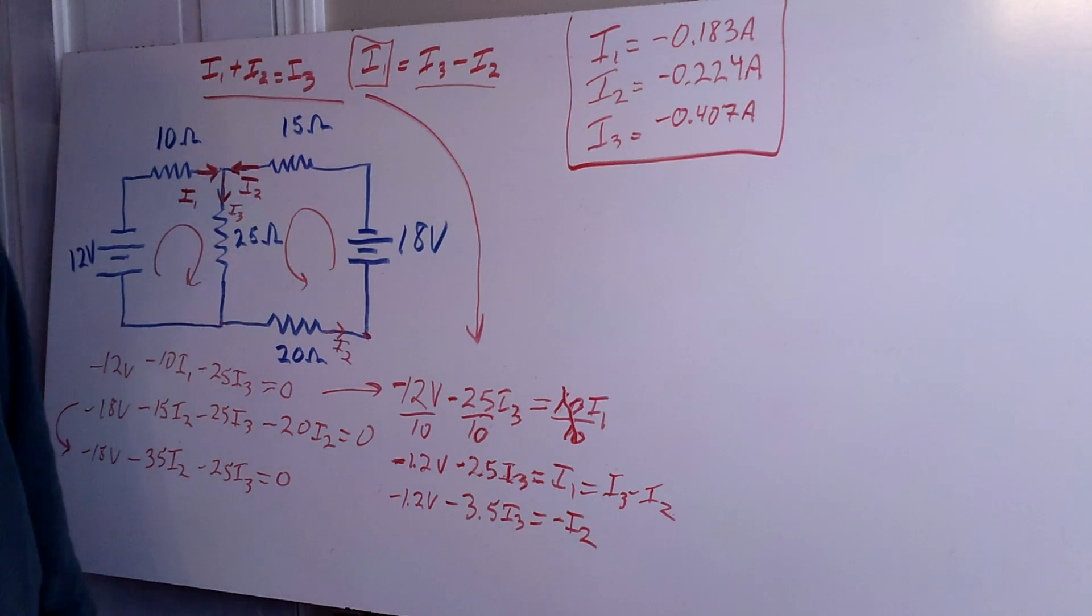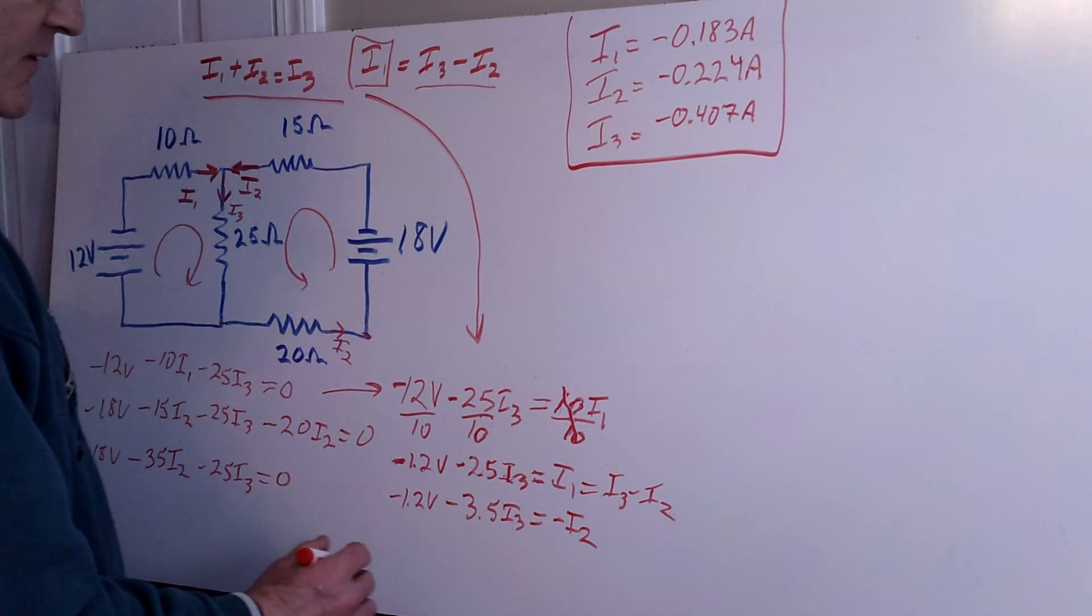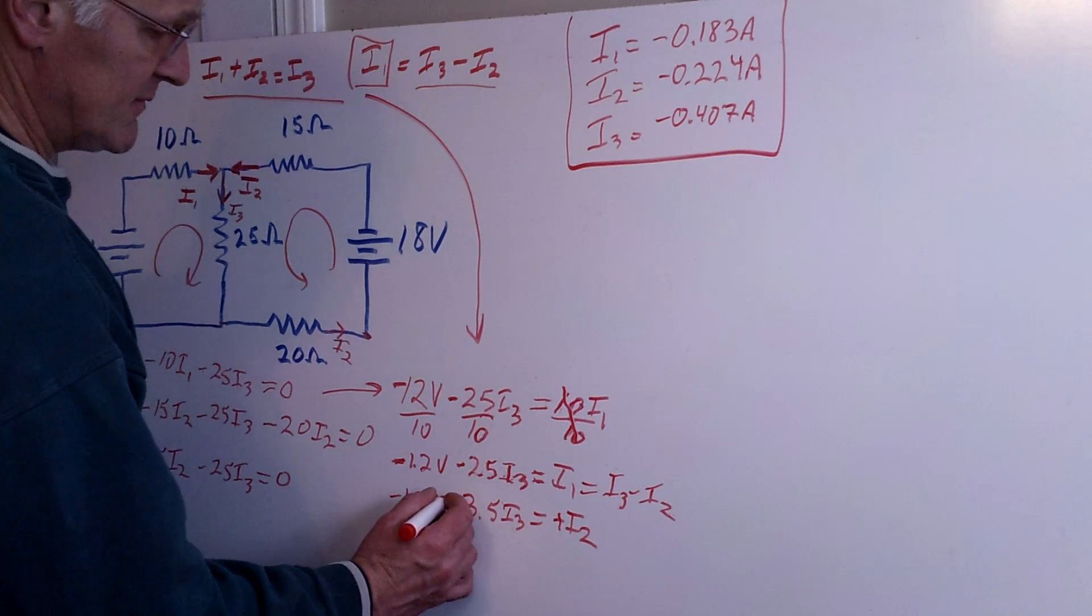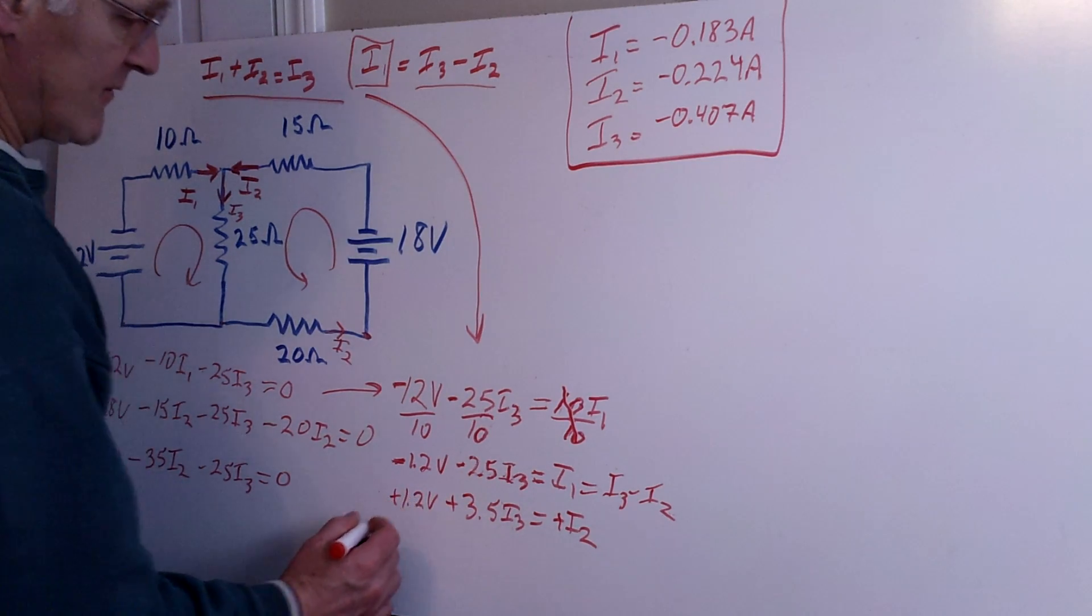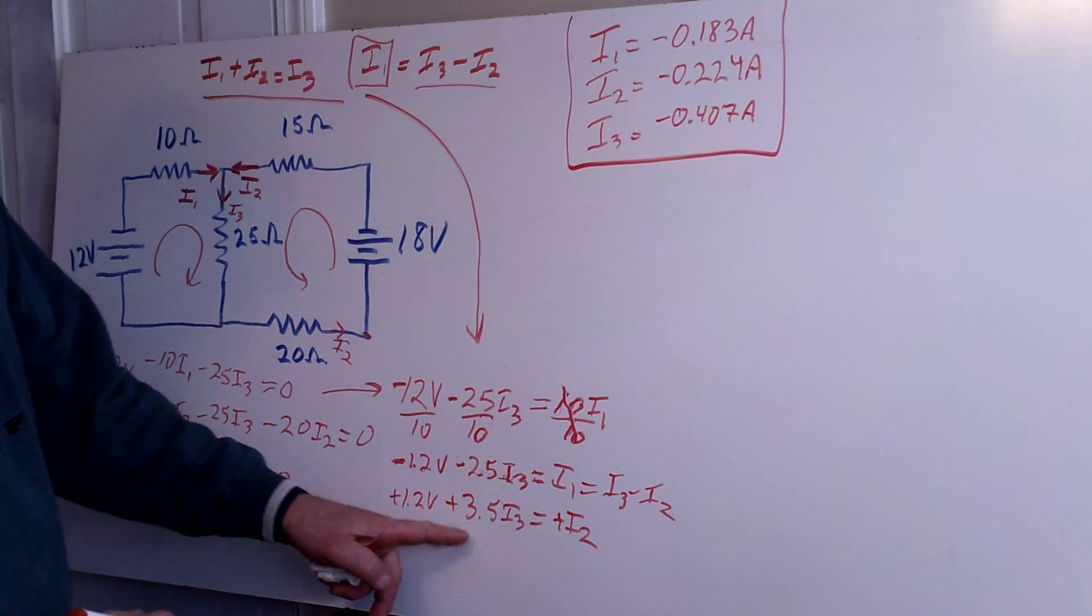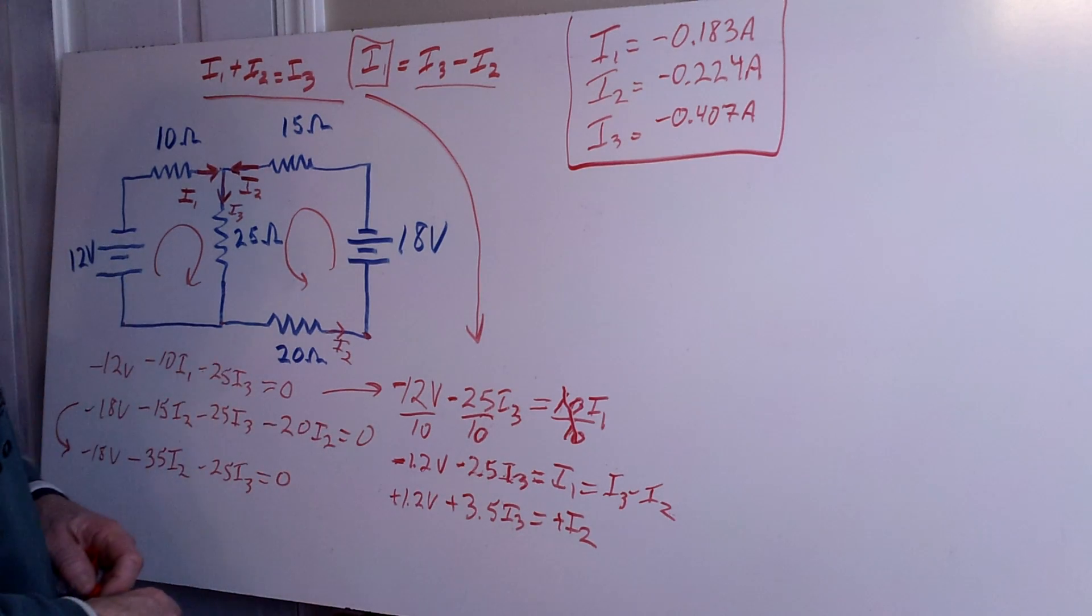And then I just change the sign on all of the components of this equation in order to get the positive version of I2. And so I have plus 1.2 volts plus 3.5 I3 equals I2.